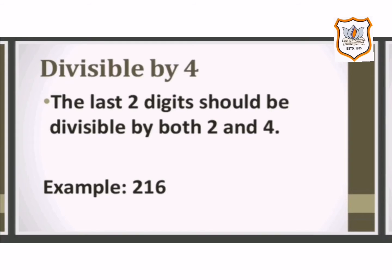The next rule is divisible by 4. A number with 3 or more digits is divisible by 4 if the number formed by its last two digits — that is, the 1's and 10's place — is divisible by both 2 and 4. For example, in 216, the last two digits are 16, which is divisible by both 2 and 4. So 216 is divisible by 4.